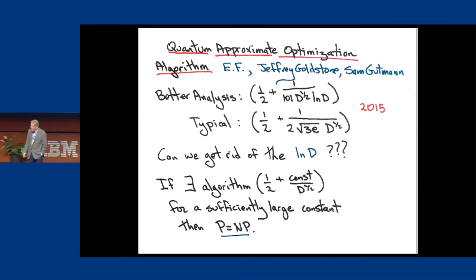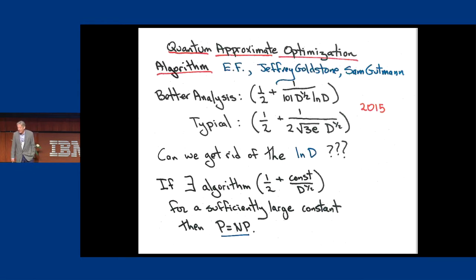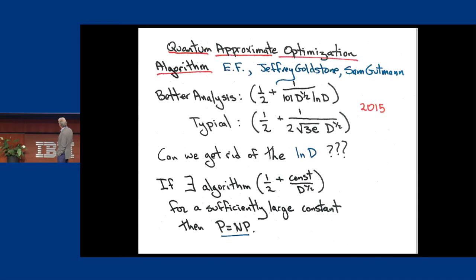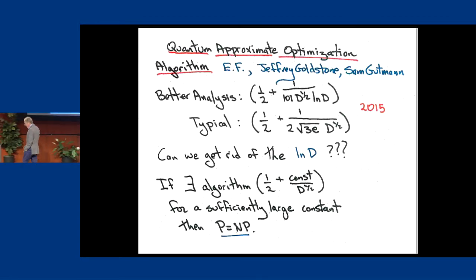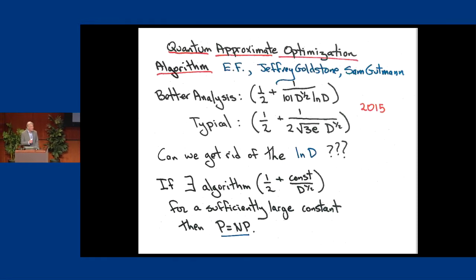At P equals 2 it may be better — it will only get better. Maybe that will beat the best classical algorithm, but you have to be careful: if there exists an algorithm achieving half plus constant over D^{1/2} for a sufficiently large constant, then P equals NP. So you're really in the weeds trying to make an improvement, but it's worthwhile to try.